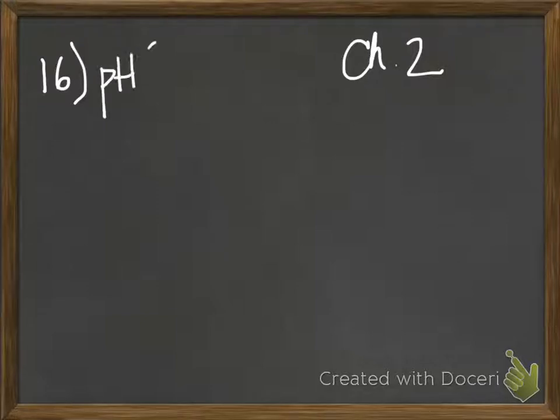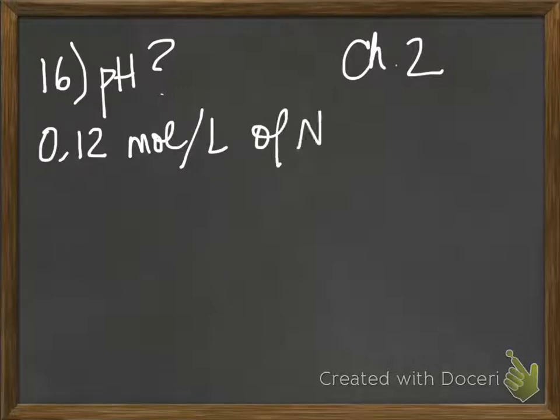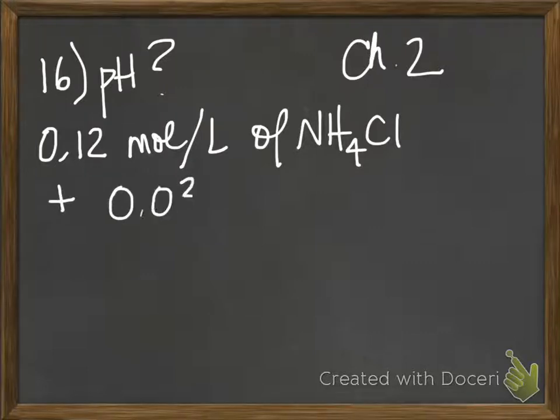What's the pH when you have 0.12 moles per liter of NH4Cl and 0.03 moles per liter of NaOH?